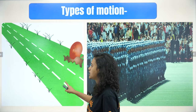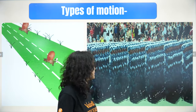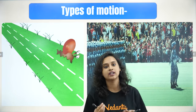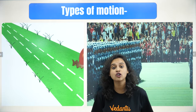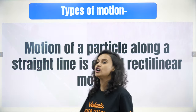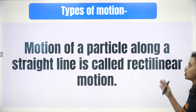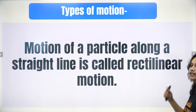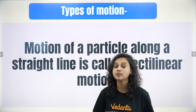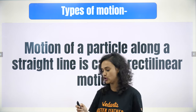Let's look at types of motion. Take a look at these insects or soldiers — they are moving in straight lines. When any object moves in a straight line, we call that rectilinear motion. The definition: motion of a particle along a straight line is called rectilinear motion.